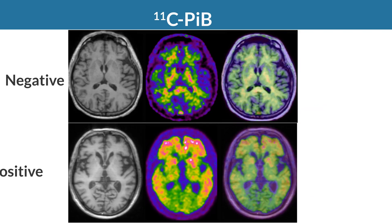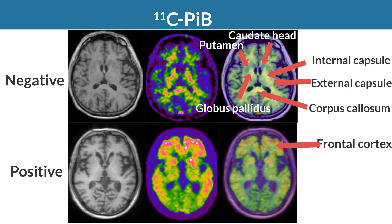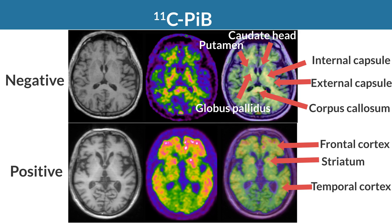At the basal ganglia level, in a negative case the internal capsule and corpus callosum show high accumulation, while striatum shows low accumulation. Globus pallidus shows higher accumulation than striatum because of higher white matter content. In a positive case, high accumulation is observed in frontal and temporal cortices and striatum, while occipital cortex shows relatively low accumulation.